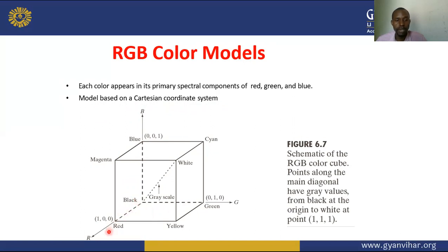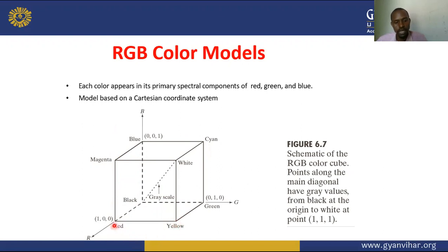By combining colours in the RGB model: red plus blue gives magenta, blue plus green gives cyan, and red plus green gives yellow. The colour seen at the centre is a combination of these colours and their coordinates. This is a schematic of the RGB cube, with grey values along the main diagonal from black at the origin to white at point 111.